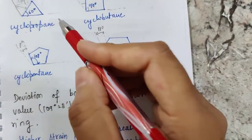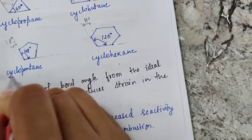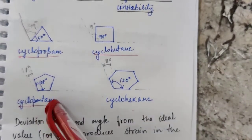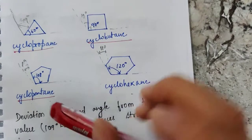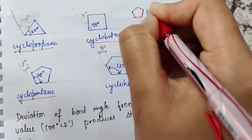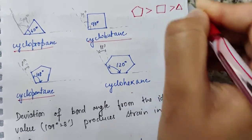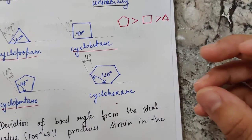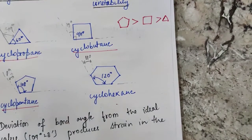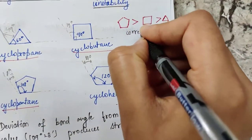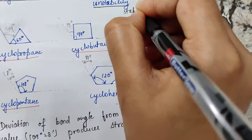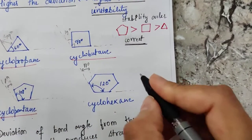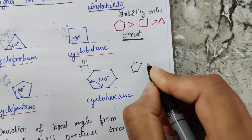Comparing cyclopropane, cyclobutane, and cyclopentane, we can say cyclopentane is most stable, followed by cyclobutane, then cyclopropane. This stability order is correct and is confirmed when you look at the reactivity and other properties shown by these compounds.